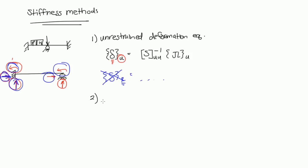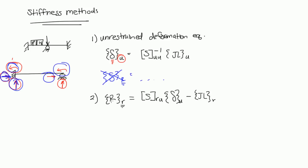The second equation is R_R = S_RU × δ_U − JL_R. R_R stands for the reactions happening at the restrained degrees of freedom — everything that couldn't deform has a reaction. S_RU is the structural stiffness matrix for the restrained-unrestrained partition. We multiply it by δ_U, the deformations we solved from equation one, then subtract JL_R, the joint loads at the restrained degrees of freedom.